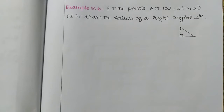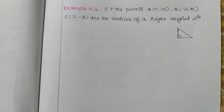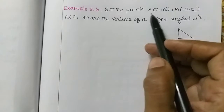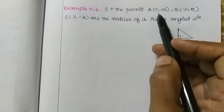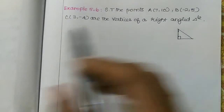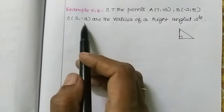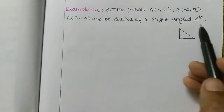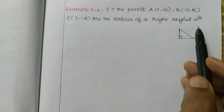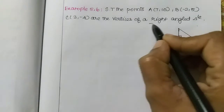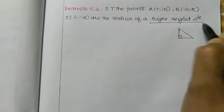Hi students. In this video we will see example 5.6: Show that the points A(7,10), B(-2,5) and C(3,-4) are the vertices of a right-angle triangle.